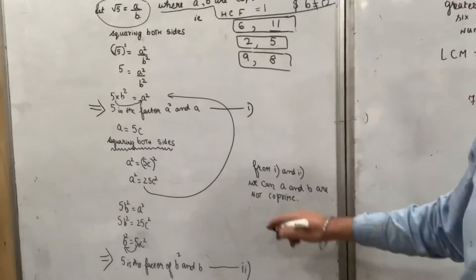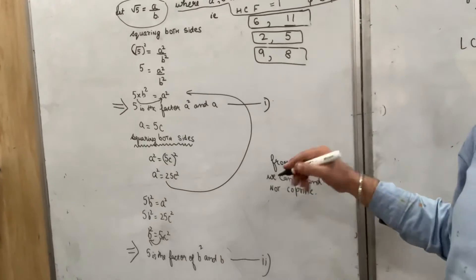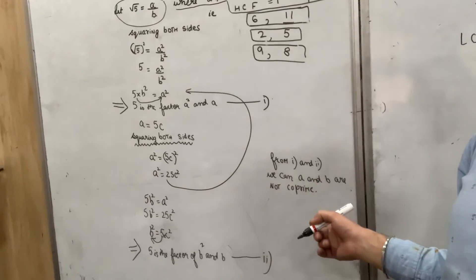From the first equation and second equation, a factor is 5, b factor is 5.